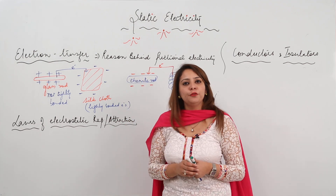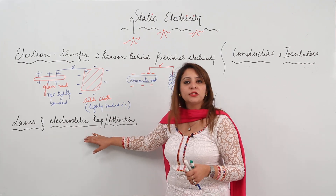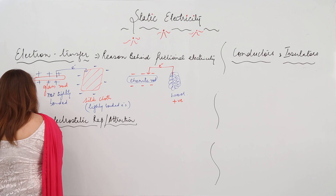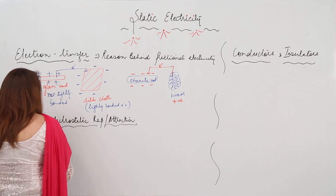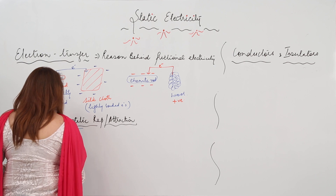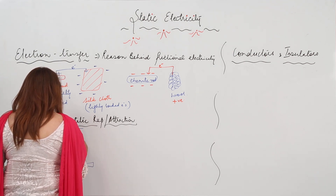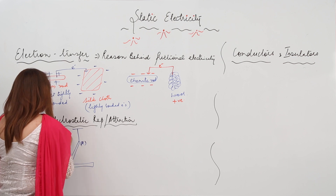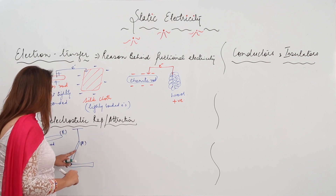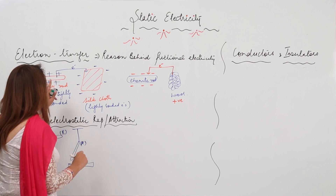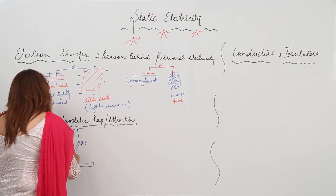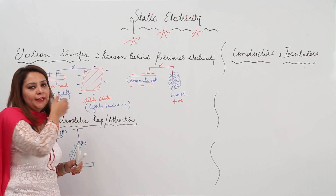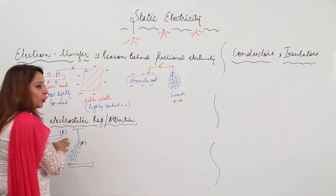Now we'll talk about the laws of electrostatic repulsion and attraction. I have a glass rod A and I'm going to suspend glass rod B with a thread on a stand. I have rubbed this glass rod with silk, so it acquires a positive charge. This positively charged glass rod is suspended with the help of a thread. Glass rod B is also rubbed with silk cloth, so it also acquires a positive charge.